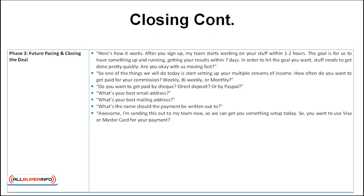Now, moving on to the third and final phase — future pacing and closing the deal: 'Here's how it works. After you sign up, my team starts working on your stuff within one to two hours. The goal is to have something up and running, getting you results within seven days. In order to hit that goal, things need to get done pretty quickly — are you okay with us moving fast? So one of the things we'll do today is start setting up your multiple streams of income. How often do you want to get paid for your commissions — weekly, bi-weekly, or monthly? Do you want to get paid by check, direct deposit, or by PayPal? What's your best email address? What's your best mailing address? What name should the payment be written out to? Awesome — I'm sending this out to my team right now so we can get you something set up today. So do you want to use Visa or MasterCard for your payment?'